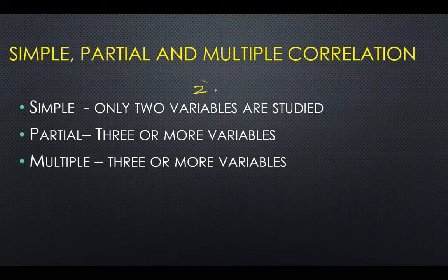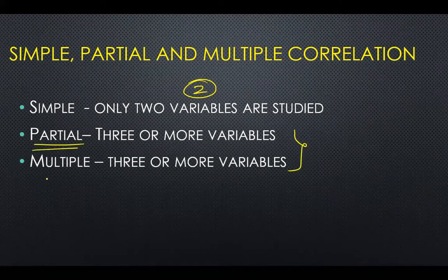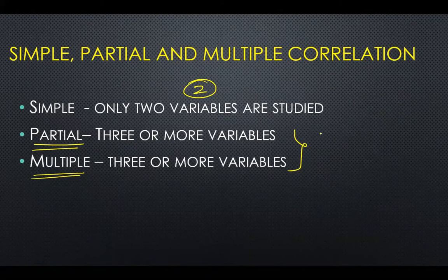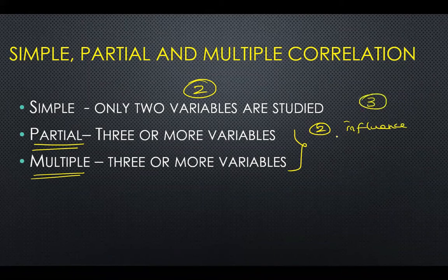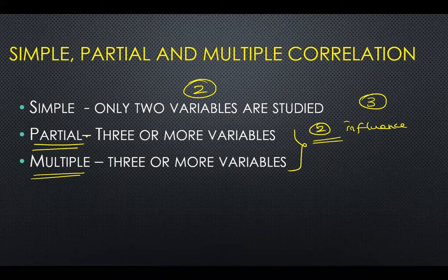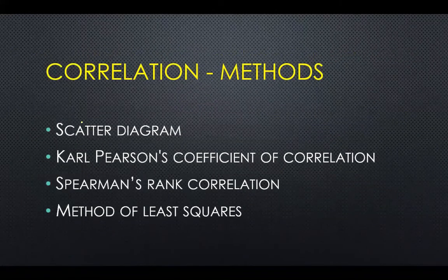Simple correlation involves studying only two variables. When more than two variables are studied, we call it partial or multiple correlation. Partial correlation looks at only the variables influencing each other among three or more variables. For now, remember: simple is for two variables, and partial and multiple are for three or more variables.